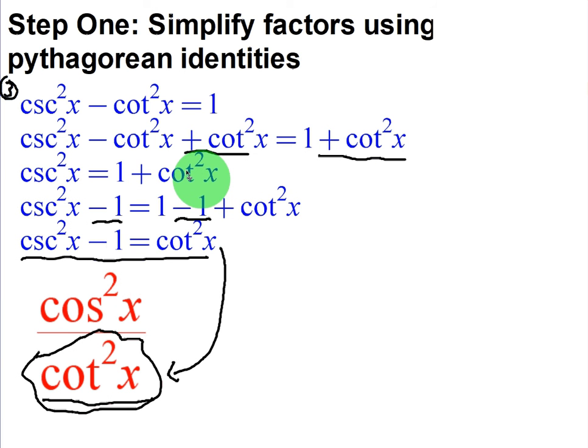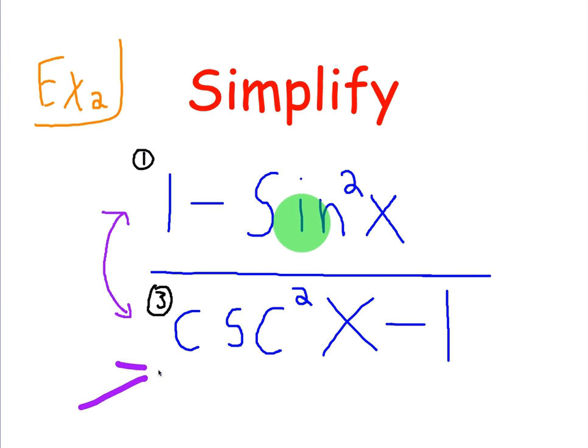But in order to get cosecant squared minus 1, we're now going to have to move the 1 over. So now we're going to subtract one from both sides, and we get cosecant squared minus 1 is equal to cotangent squared of x. Does this cosecant squared minus 1 look familiar? If you said yes, you were correct, because that's what we were given.